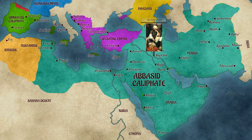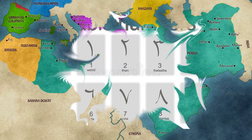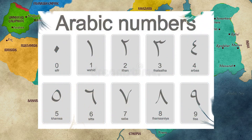One of the first contributions that Muslim mathematicians made was the adoption and popularisation of the Indian numeral system. Muslims recognised the power and efficiency of this system compared to the Roman numeral system.